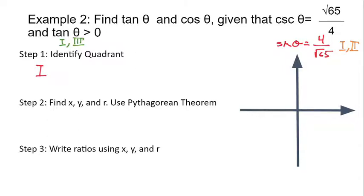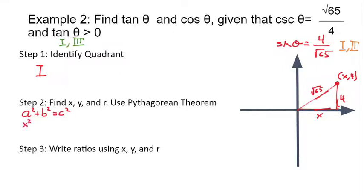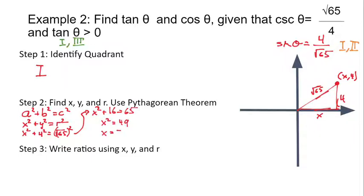We'll graph the relationship: sine is 4/√65, so y = 4 and r = √65; x is unknown. Using the Pythagorean theorem: x² + y² = r², so x² + 4² = (√65)². That gives x² + 16 = 65. Subtracting 16 from both sides gives x² = 49, and taking the square root gives x = 7. Since we're in quadrant 1, x is positive. So y = 4, r = √65, and x = 7.